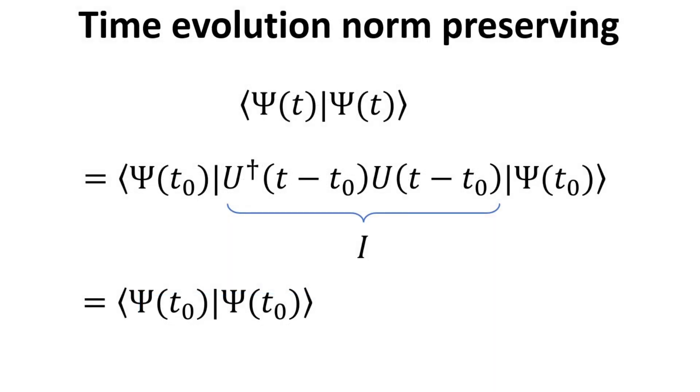Any time evolution of the wave function must preserve its norm, since electron density cannot increase or decrease in a closed system. We start with the inner product of the state vector at time t. We can express it in terms of its state vector at earlier time t₀ using the time evolution operator. Since U† multiplied with U is just the identity, we recover back the inner product of the state vector at earlier time. Hence, time evolution is norm-preserving. Again, this is very much analogous to the translation operator we discussed for position and momentum operator in previous videos.